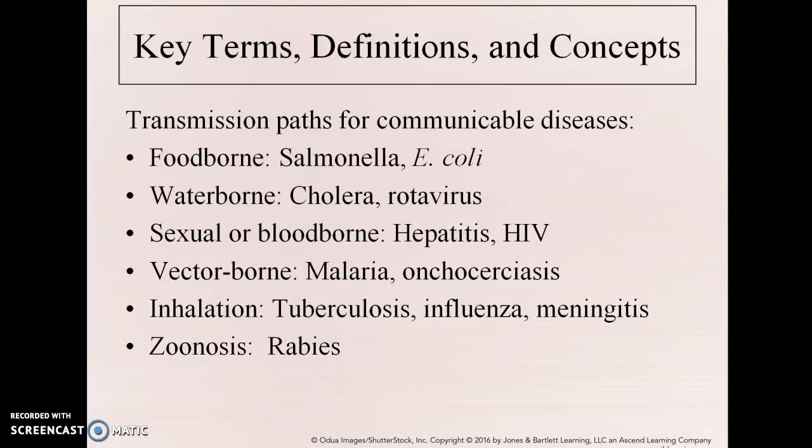Some other terms relate to the paths by which people get communicable diseases. They can be foodborne, such as Salmonella or E. coli. Waterborne, such as cholera or rotavirus — we've heard of rotavirus connected with cruise ships. Sexual or bloodborne, such as hepatitis B, hepatitis C, or HIV. Vectorborne, such as malaria or the Zika virus coming through the mosquito. Inhalation, with things such as influenza, tuberculosis, or meningitis. And zoonosis, which are bites by animals, such as rabies.